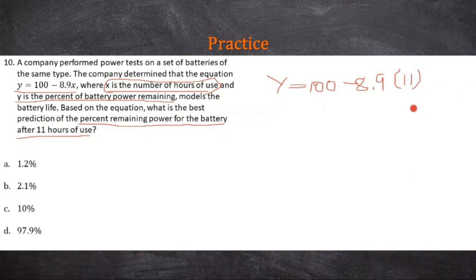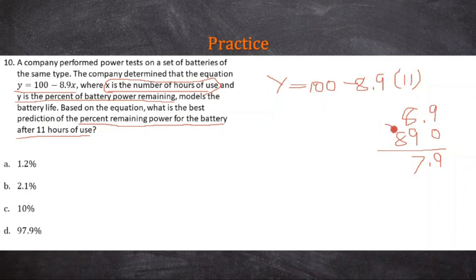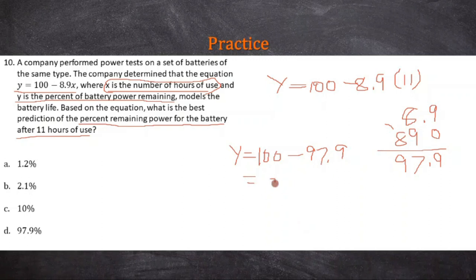This is easy to multiply out: just do 8.9 times 11. If 1 times 8.9 is 8.9, and 10 times 8.9 is 89, I just add it up — that's 97.9. But we still have to plug it into the equation: y is equal to 100 minus 97.9, and that is going to equal 2.1. So the best prediction is 2.1 percent of battery power remaining after 11 hours of use.